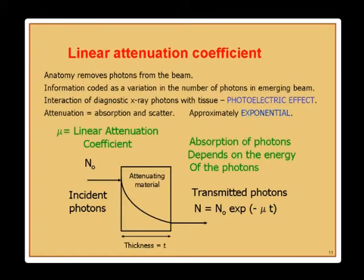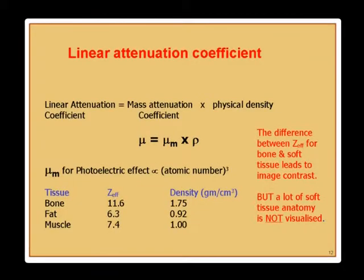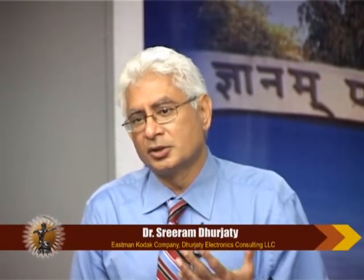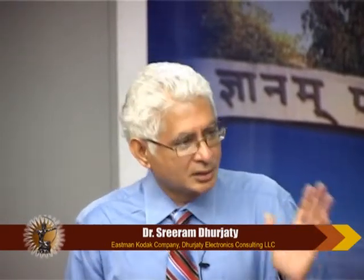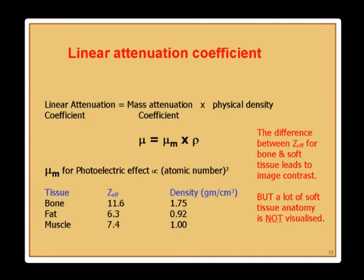Attenuation includes both absorption and scatter. If N is the incident photons and t is the thickness of the attenuating material, then the relationship between N-zero and N is exponential — related to both the thickness and the attenuation coefficient. It is called the 'linear' attenuation coefficient because it was linear in the log domain. People used to look at densities on film, and densities are the log of intensity, so it appeared linear — hence the name.